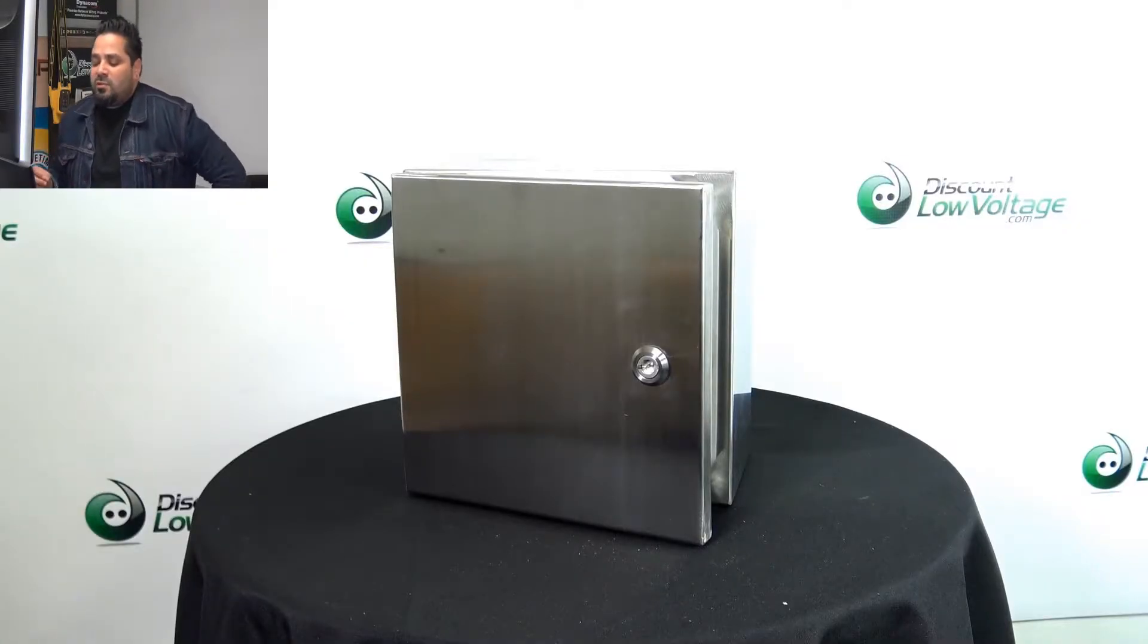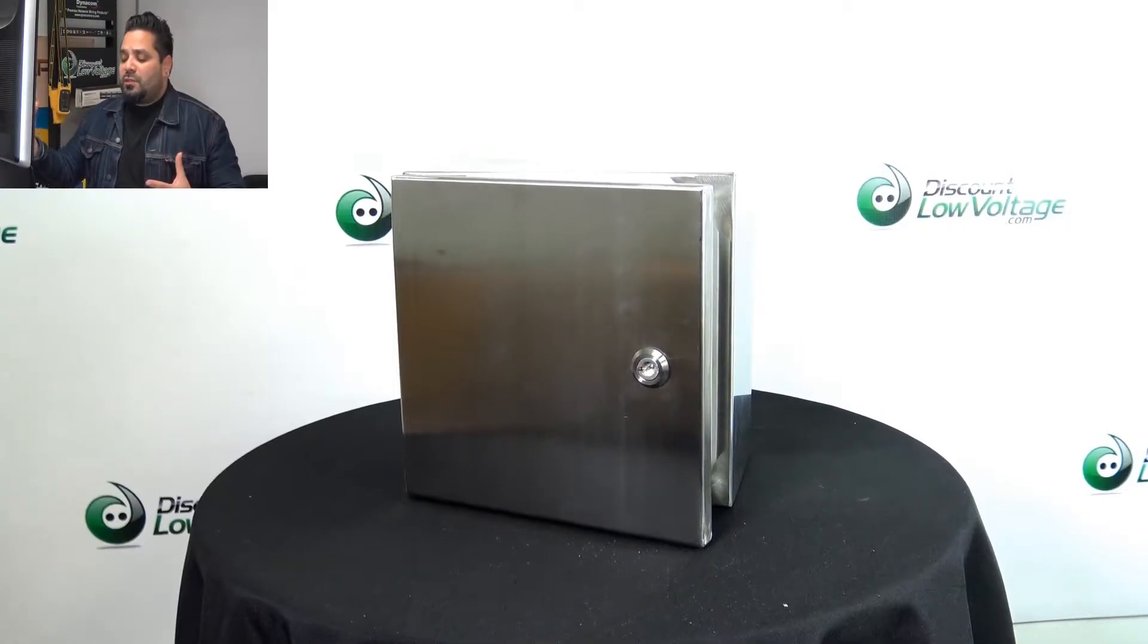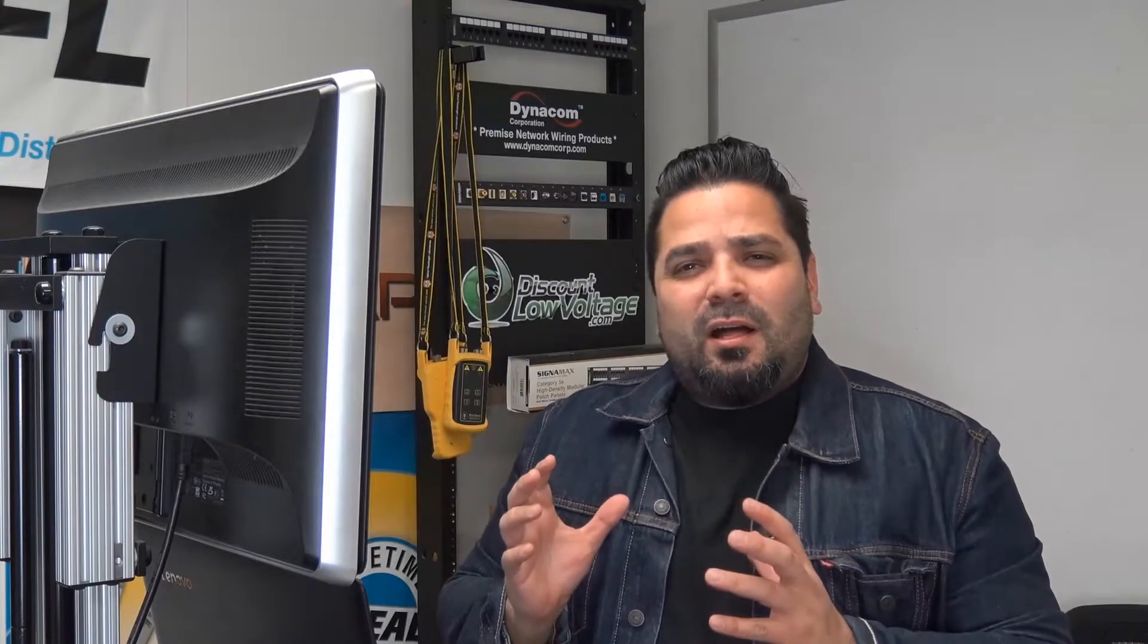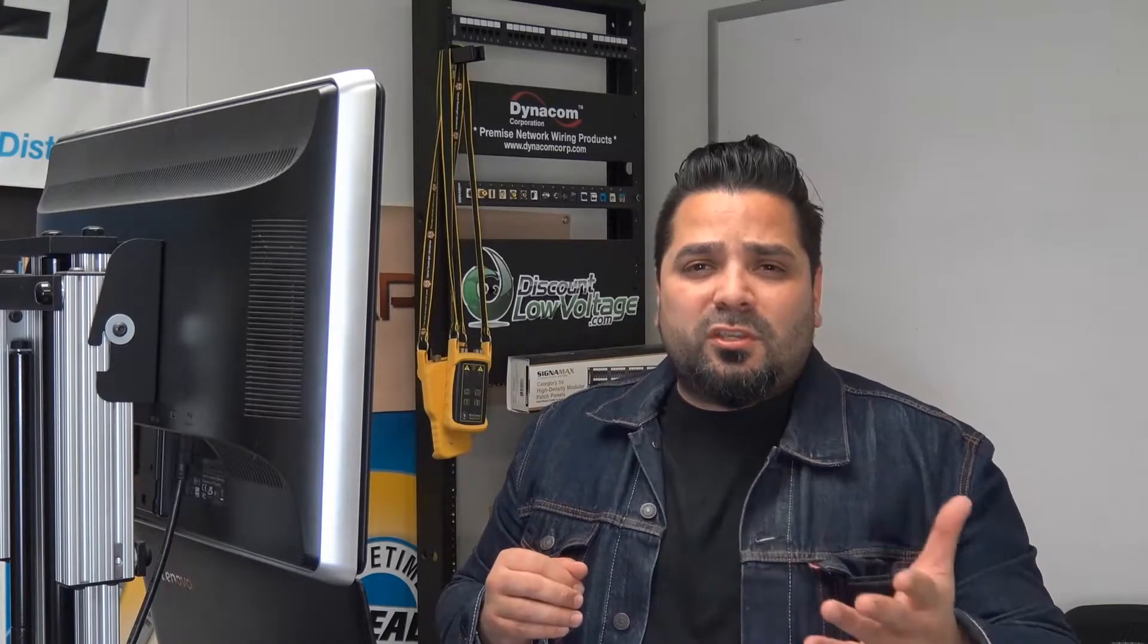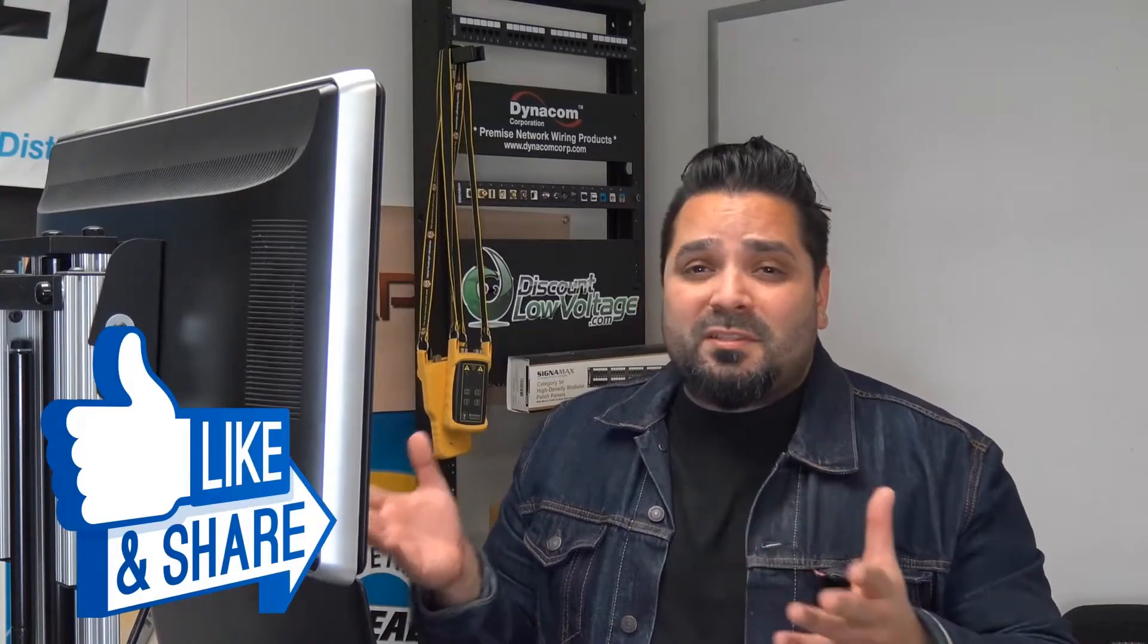And there it is. What else can I tell you about this enclosure? We do have quite a few different sizes. That's the small one. The small one has one lock. The bigger ones have two locks, one on top, one on the bottom, so it keeps that seal nice and tight and secured. You don't want to get any moisture in there and it'll take care of you for a long time—I mean stainless steel.